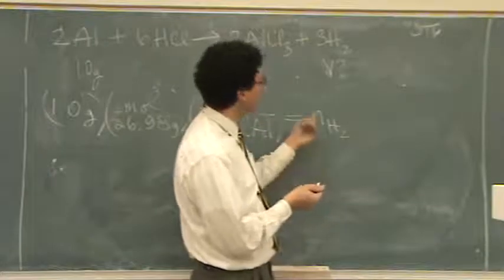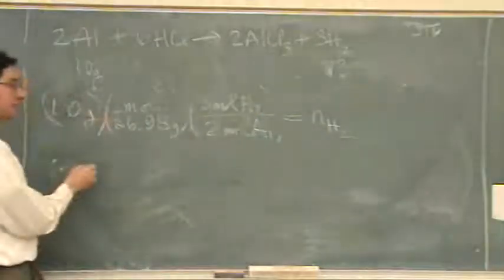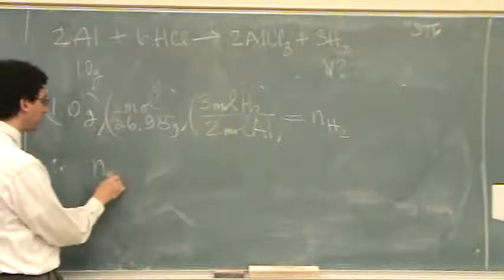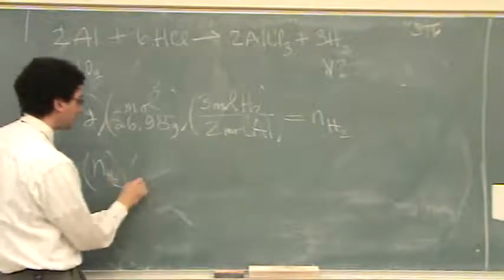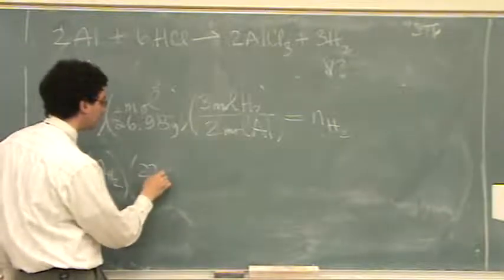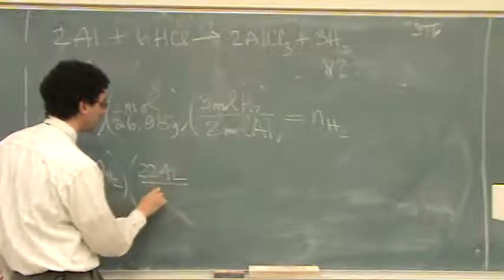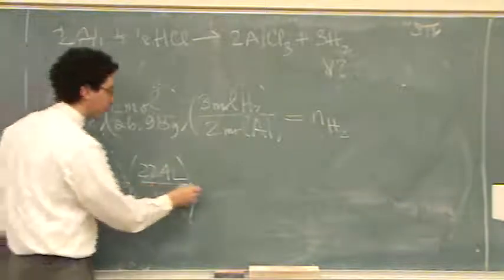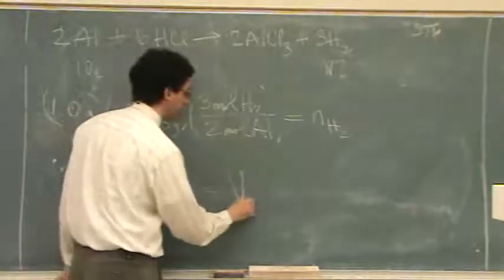You have the moles, so you just need the volume. And the other way you could do it, if you want to save some chalk or ink, would be to take the moles of H2, whatever that value is, and times by 22.4 liters per mole. And so then your moles will cancel, and you'll get a volume for H2.